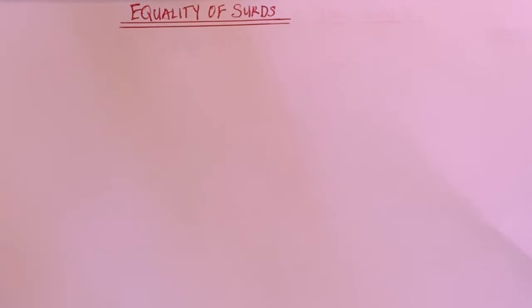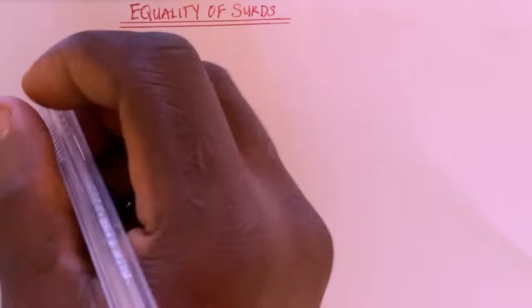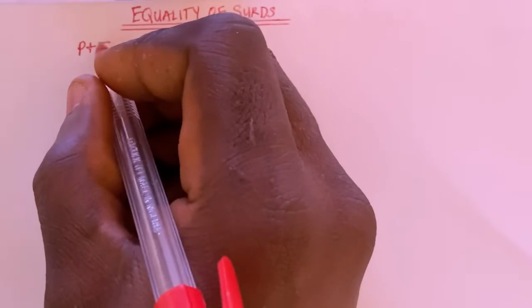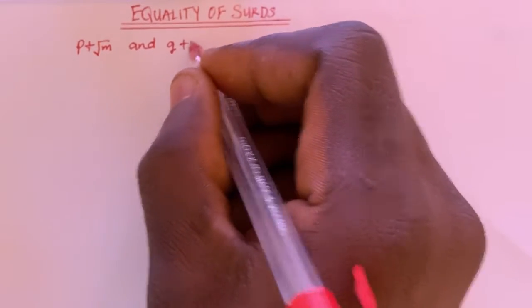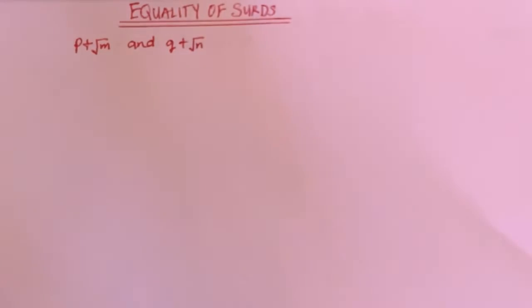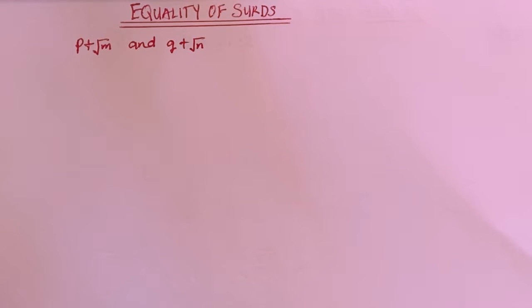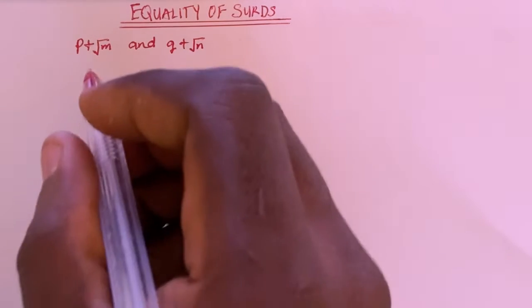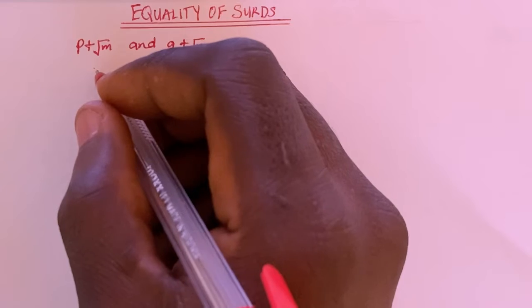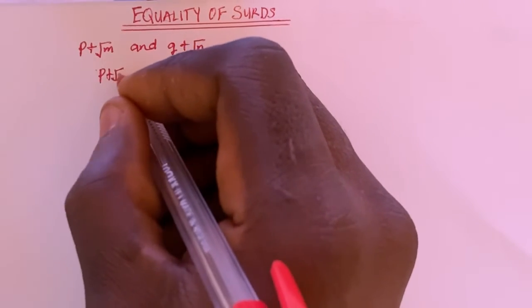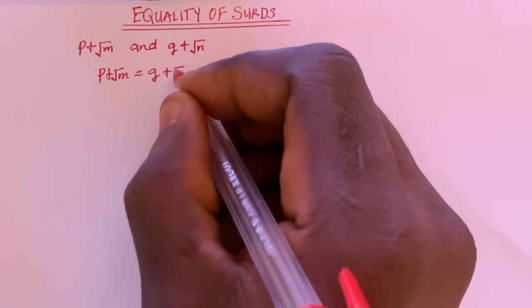Friends, in this video we'll be talking about equality of surds. Suppose you are given an expression P plus root of M, and also you are given Q plus root of N, and you are asked to find the condition that must be satisfied for P plus root of M and Q plus root of N to be equal. The first thing you need to do is equate these surd expressions to each other, so you are going to have P plus root of M equals Q plus root of N.